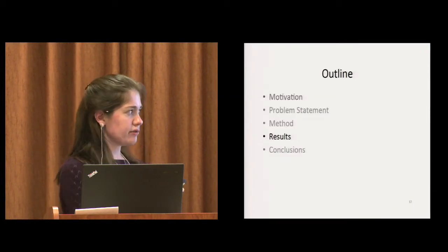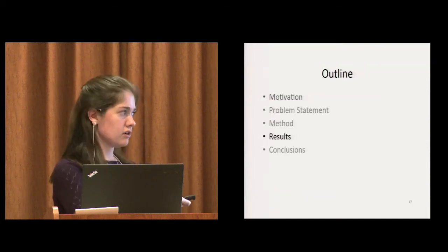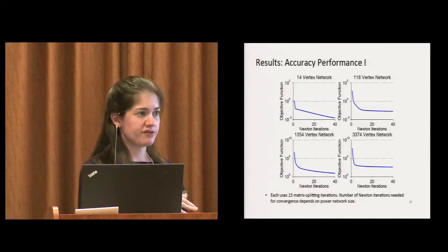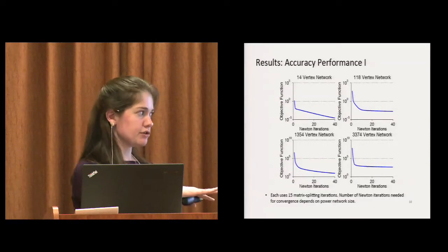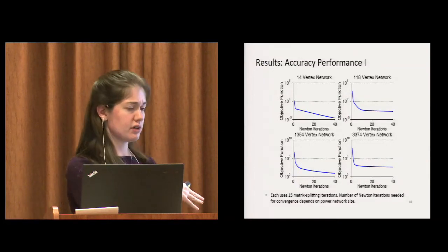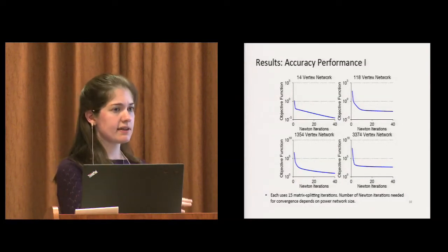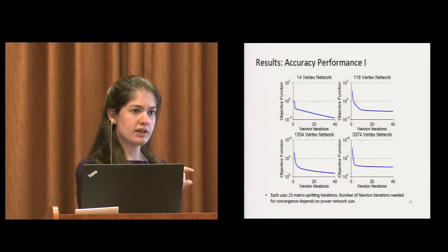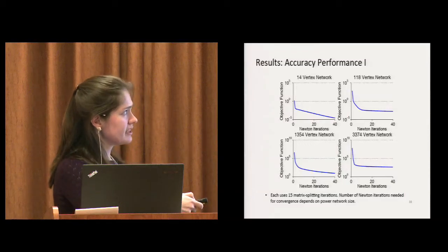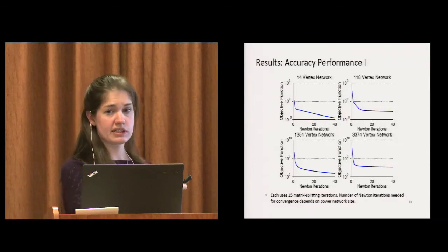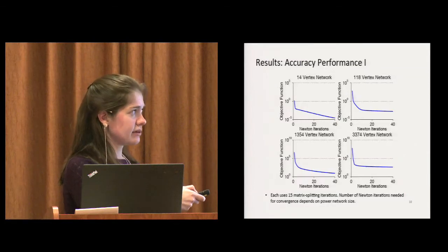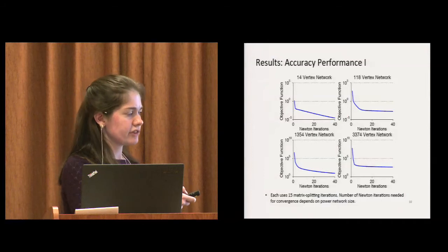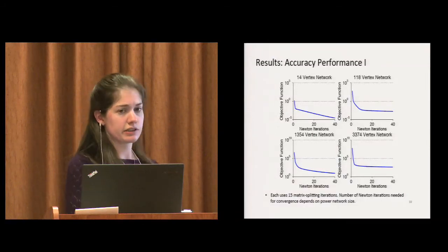Now I'd like to show the results we have using Blue Waters on our real power system test cases. First we wanted to see if we fixed the number of matrix splitting iterations, how is the convergence of the objective function behaving as the network size grows? Here again the objective function is the weighted sum of residuals. We tried four different setups from a 14 vertex network to a 3,000 vertex network. We see that the small network is converging. The larger network hasn't converged yet.